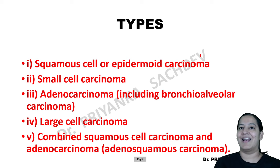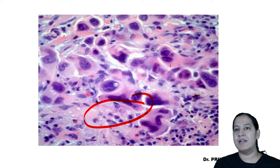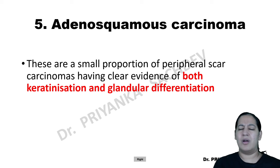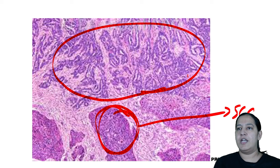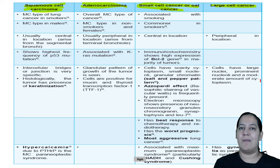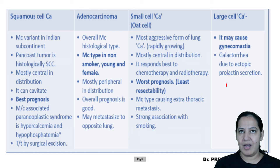The fourth type, large cell carcinoma, occurs peripherally. The tumor cells are large — that is why it is called large cell carcinoma. The fifth type is the combined adenosquamous carcinoma, where you can see both keratinization (squamous feature) and glandular pattern (adeno feature) in the same histological slide.